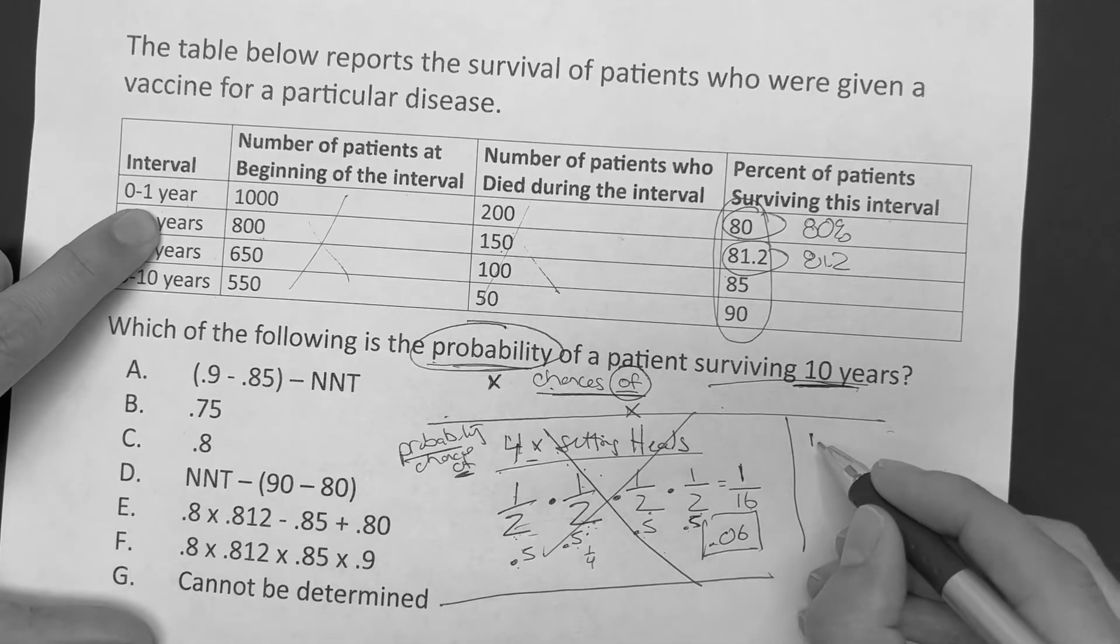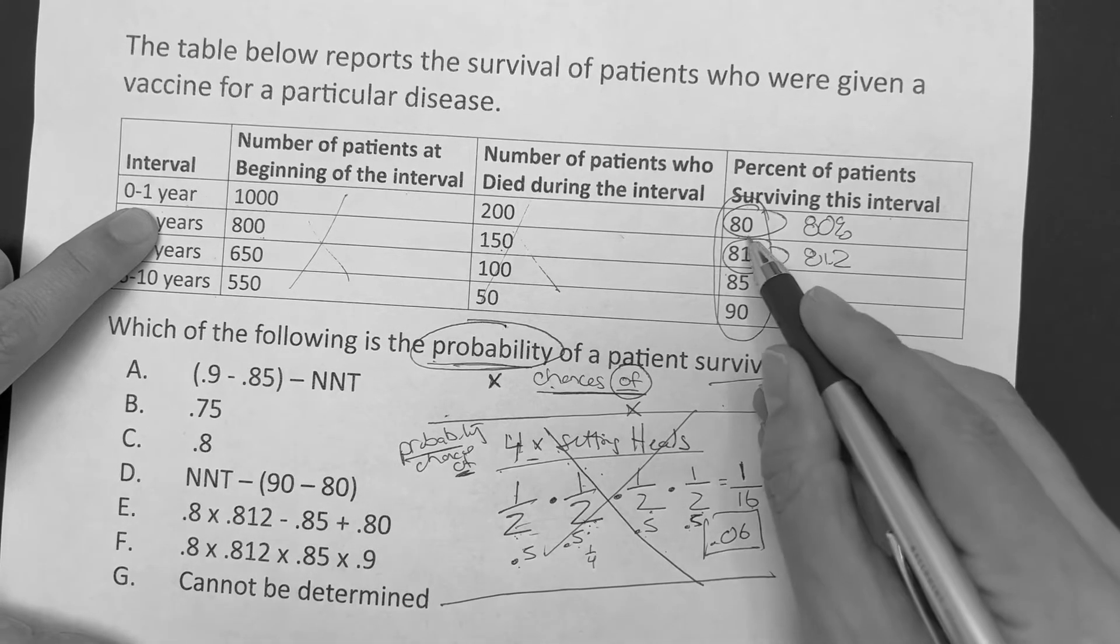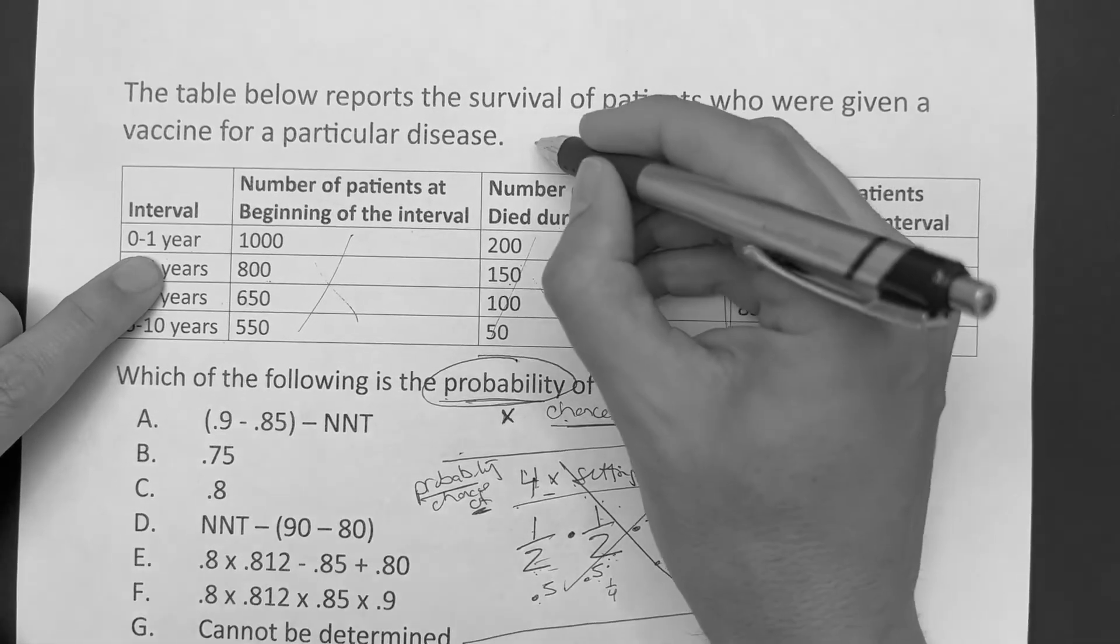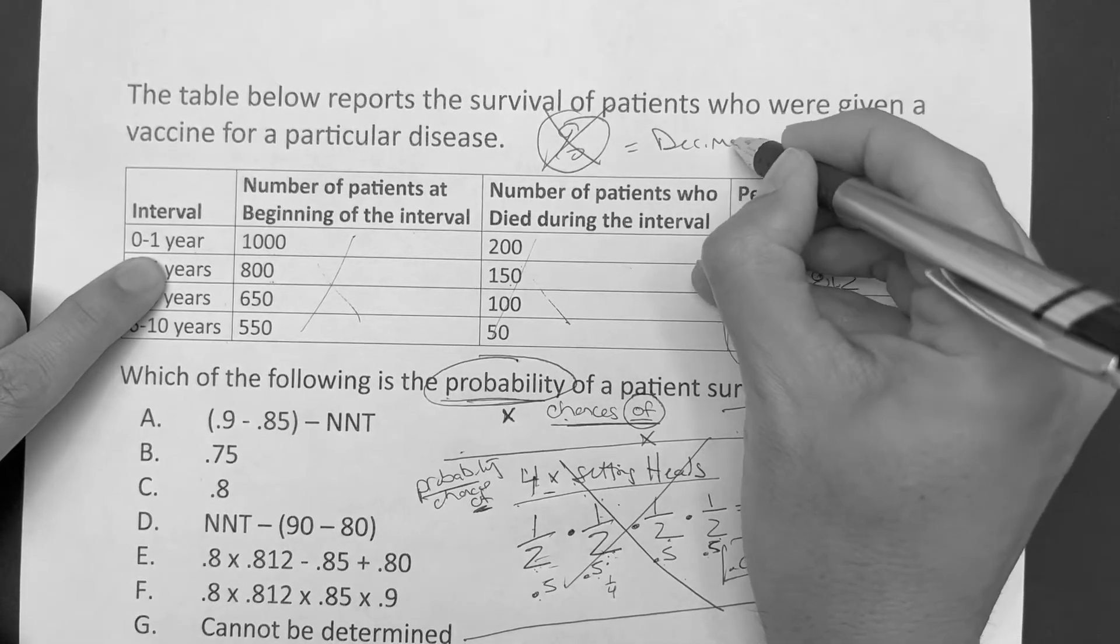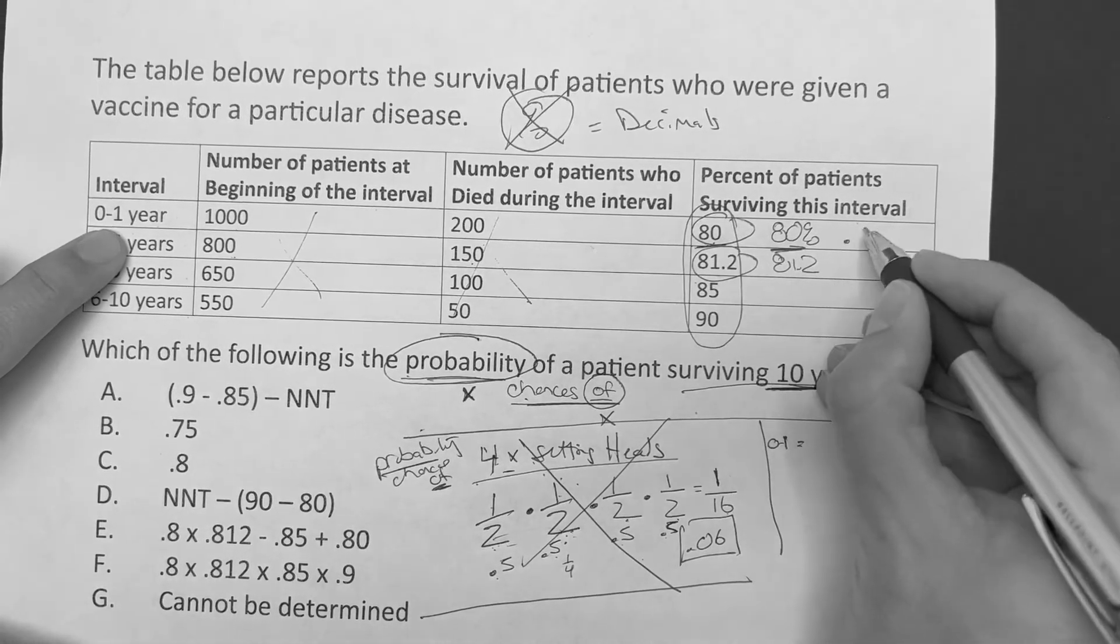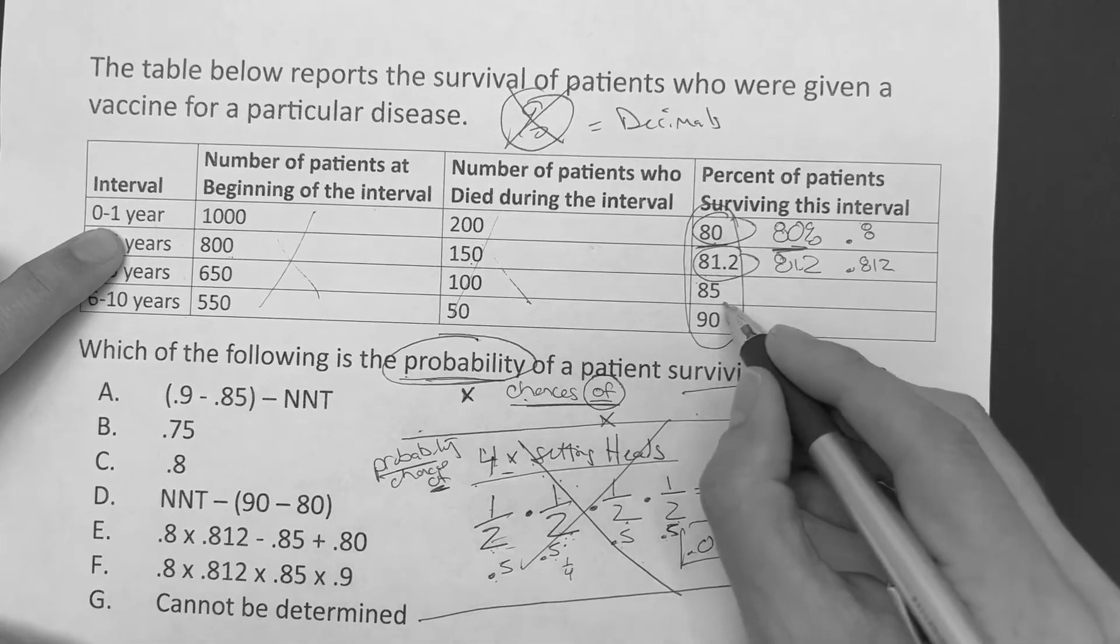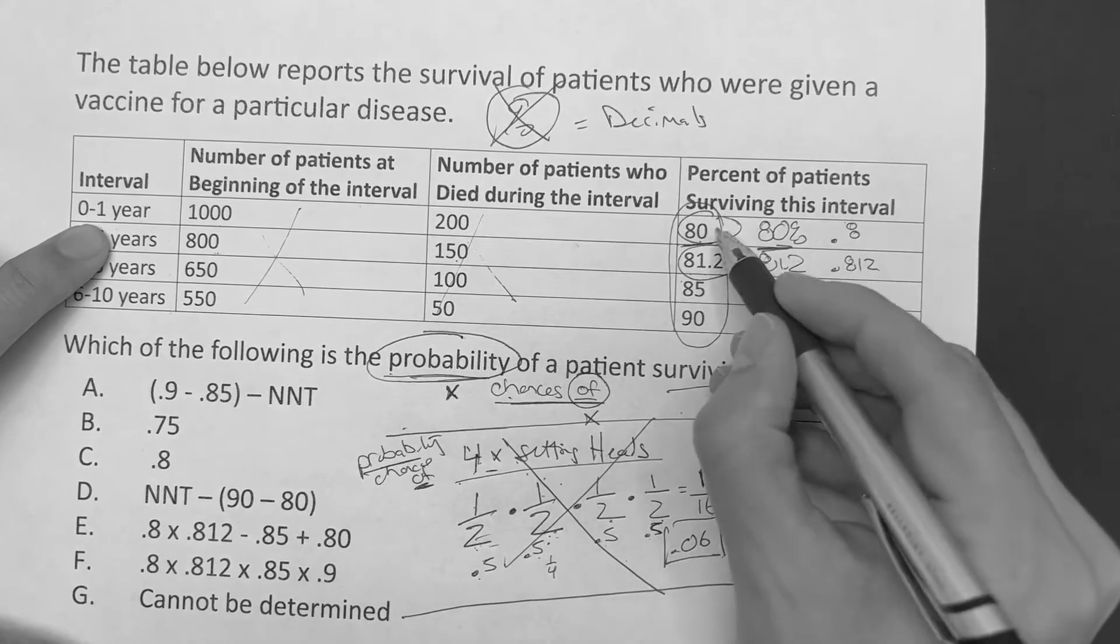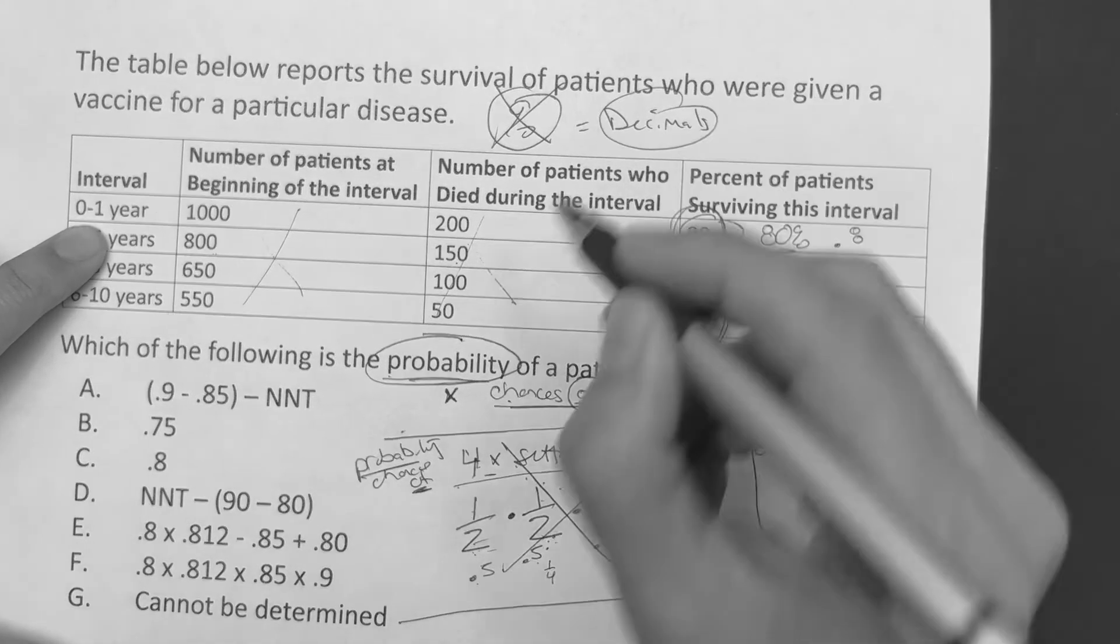These two columns basically were just the math to make these. Because when I look at this, it's the same thing as the coin toss. Between zero and one, what's the probability of living? Probability of living is 80%. In math, I don't like percents, I like decimals. So instead of saying 80%, I'm going to say 0.8. Instead of 81.2%, I'm going to go 0.812, then 0.85 and 0.9. So as a rule, always turn your percents into decimals. It'll save you every time.